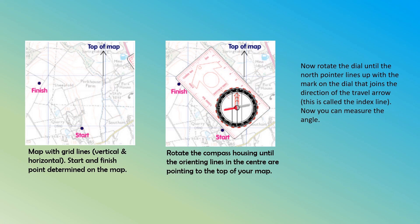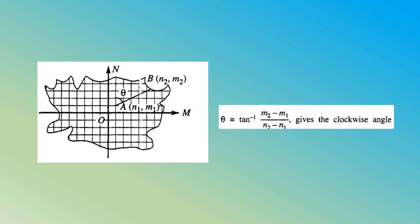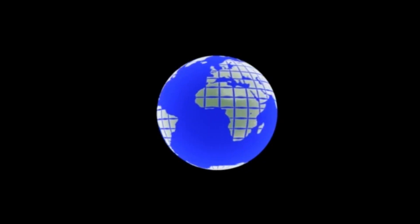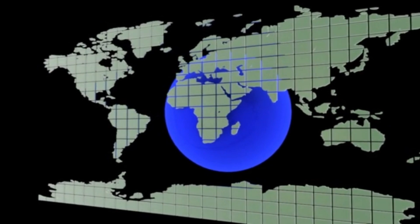When using calculations, if A and B are the starting and ending points of the line in a map and their coordinates are (n1, m1) and (n2, m2), then the grid bearing angle theta is given by the inverse tangent of (m2 minus m1) divided by (n2 minus n1), which gives the clockwise angle. In a grid-based survey or map, the grid network is established with horizontal and vertical lines forming a coordinate system. The grid lines in a map are often parallel to the true meridian and are spaced uniformly. Grid bearings allow for a consistent and precise representation of directions within the grid system.